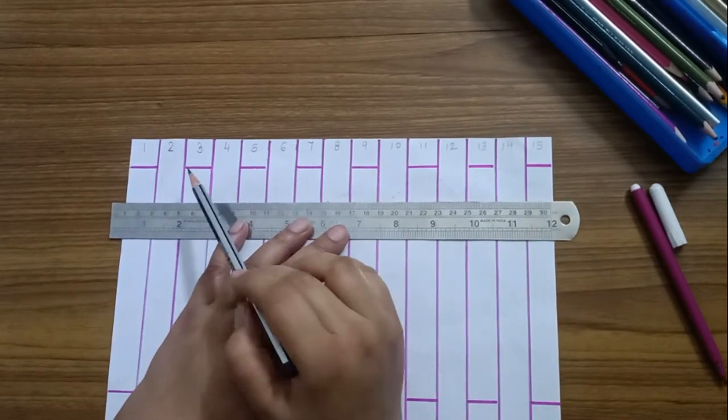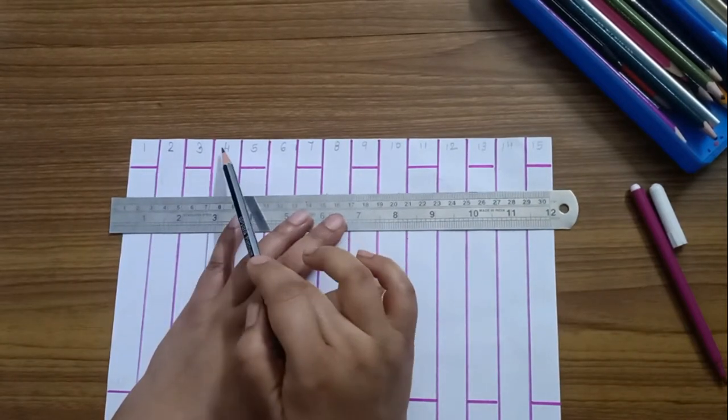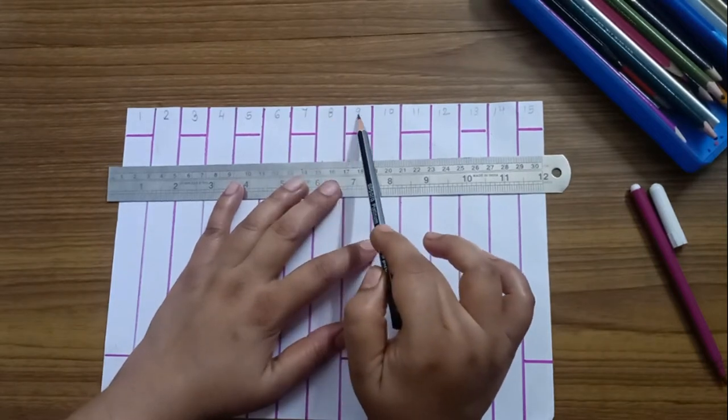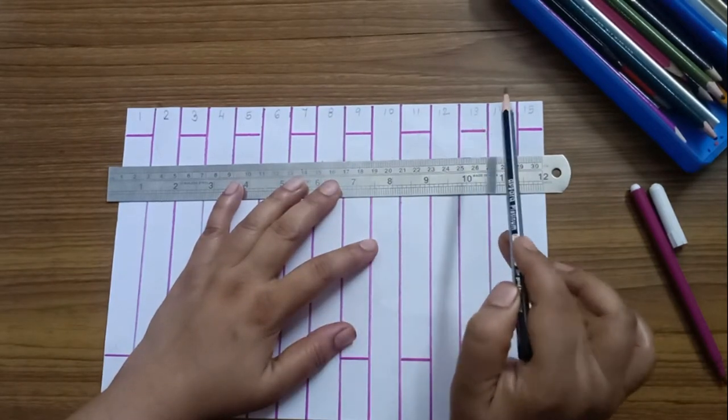After that, put a number on every column like 1, 2, 3, 4, 5, 6, 7, 8, 9, 10, 11, 12, 13, 14 and 15.